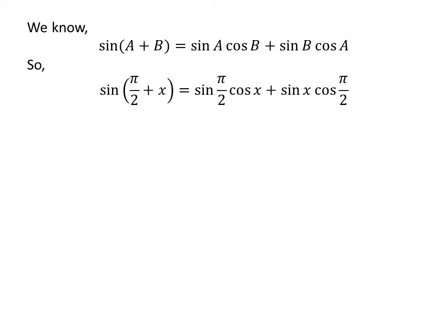Let us apply the above identity for sine of half of pi plus x. Here, A is half of pi and B is x. So sine of half of pi plus x is equal to sine of half of pi times cosine of x plus sine of x times cosine of half of pi.